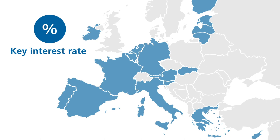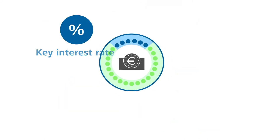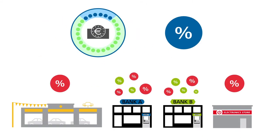In the euro area, it is set by the governing council of the European Central Bank. Its level is always set with a view to keeping the purchasing power of the euro stable. The key rate has an impact on all other interest rates in an economy and therefore also has an effect on all economic activities.